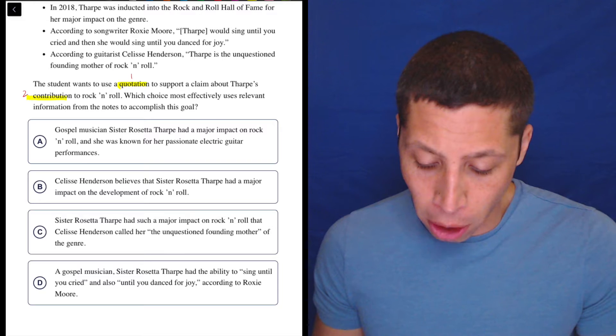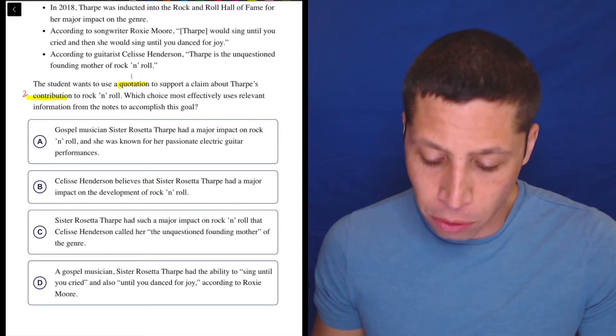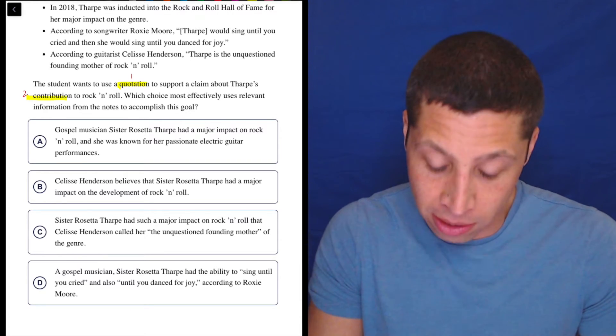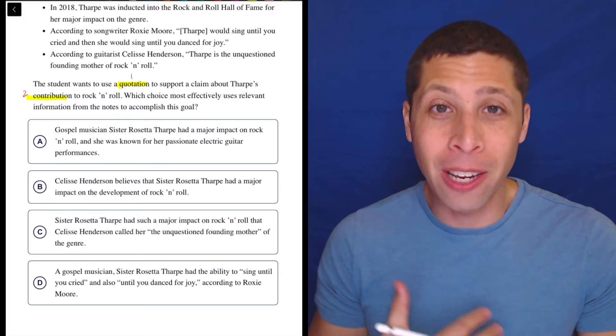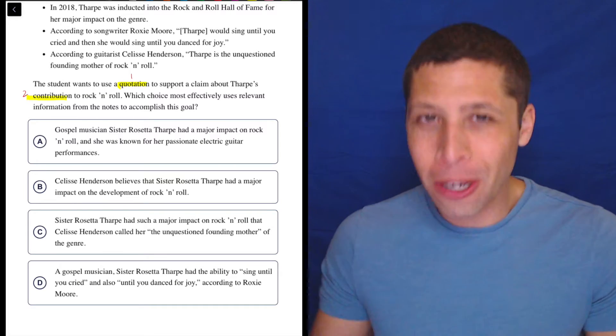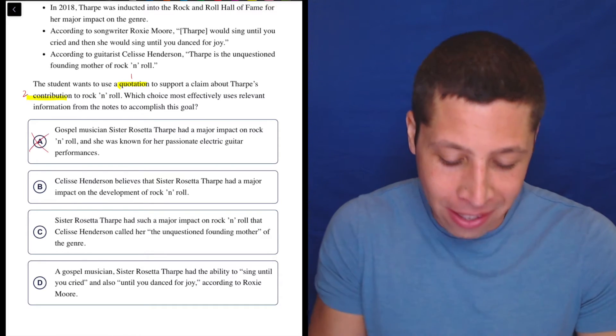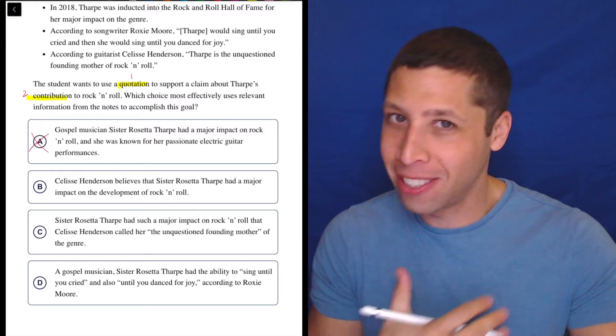A: Gospel musician Sister Rosetta Tharp had a major impact on rock and roll and she was known for her passionate electric guitar performances. It's maybe explaining what her contribution is, but it's not using a quote. That's a very easy thing to notice—we could just skim and see that piece is missing.